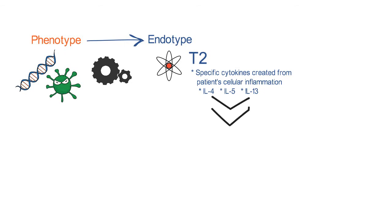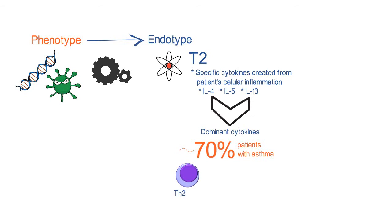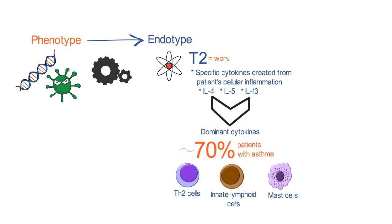Those are the dominant cytokines and inflammatory pathway in about 70% of patients with asthma. There are also different cells that produce these cytokines, including T helper 2 cells, innate lymphoid cells, and mast cells. And that type 2 or T2 gene expression also correlates with worsening asthma control. So that's an example of an endotype that creates a certain phenotype or kind of asthma.